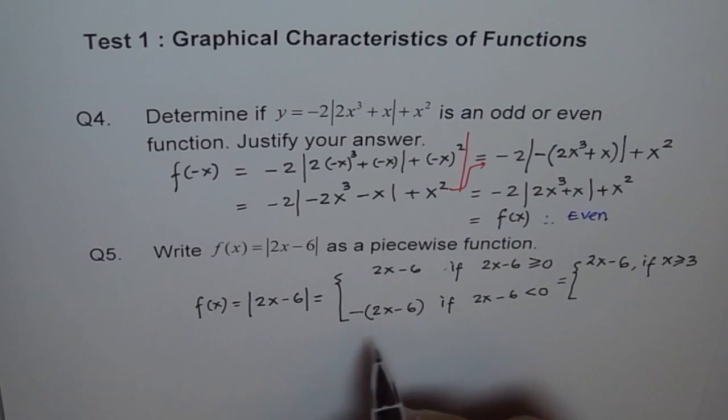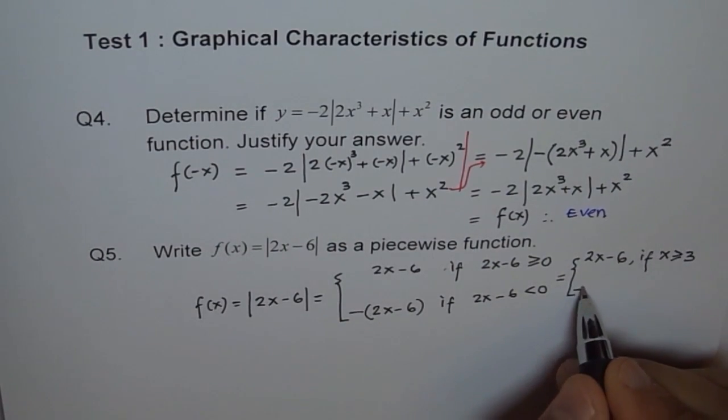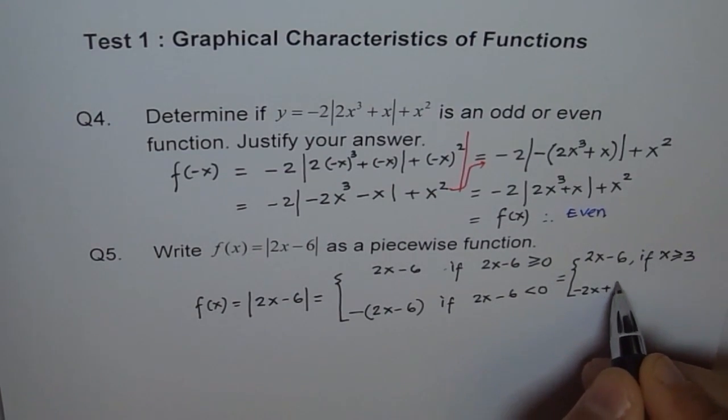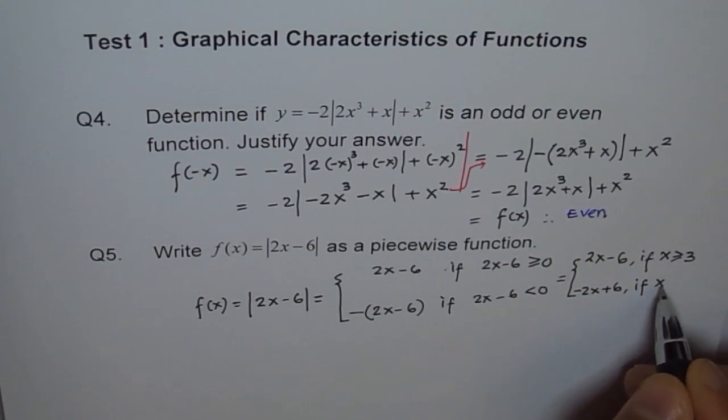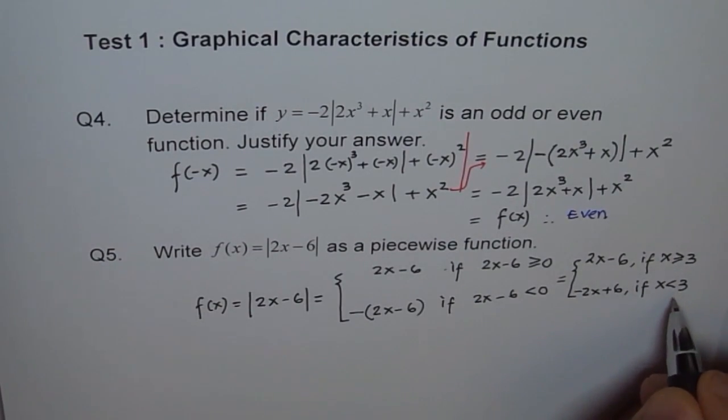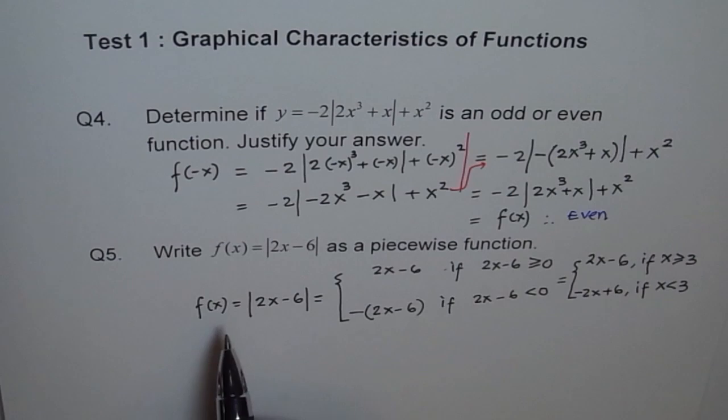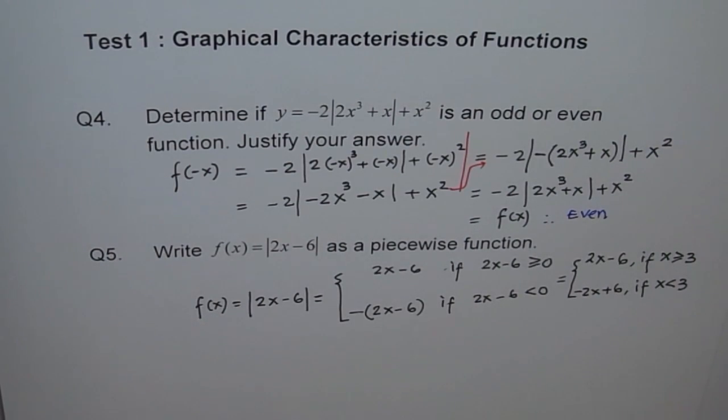And it is equals to minus of 2x plus 6, if x is less than 3, you see? That is how we are going to define f(x), which is the absolute value of 2x minus 6, as a piecewise function. So there are two pieces to it, right?